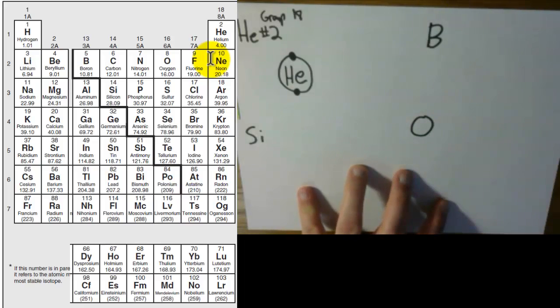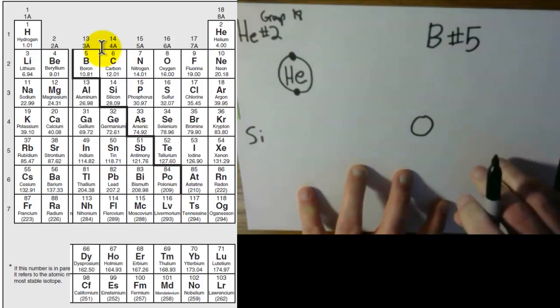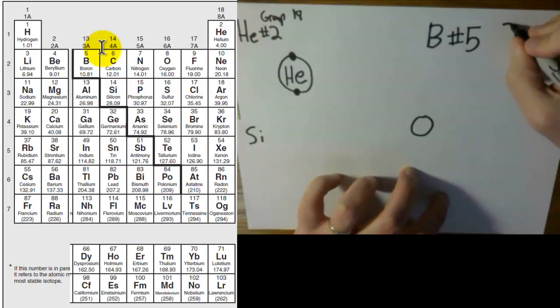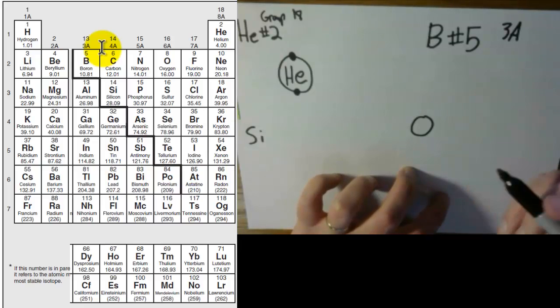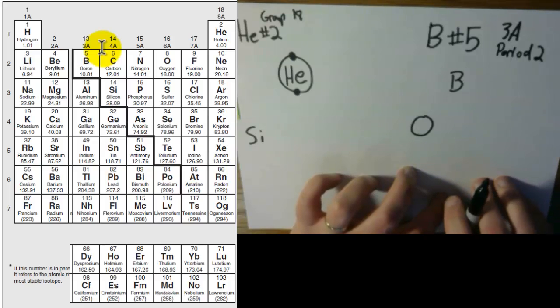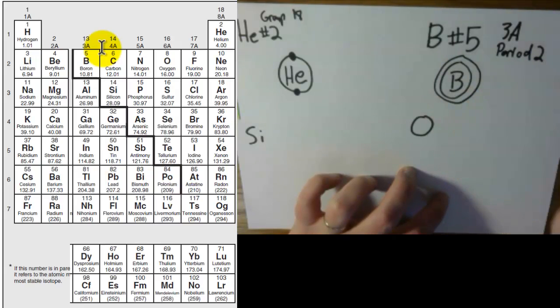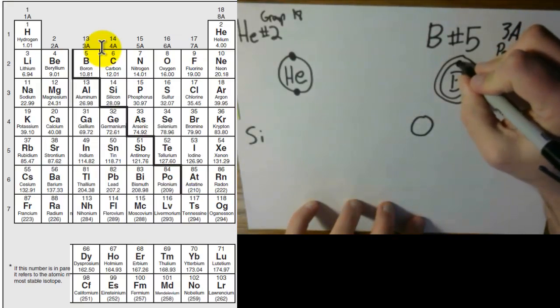Next up is boron. Boron is right here. It's element number five, and it is in group 13 or 3A. So I'm just going to put 3A here because 3 is the number that we care about from there, and it's also in period two. So you start by drawing its symbol again. Since it's in period two, it has two rings. Here's ring one. Here's ring two. The first ring can hold two, so it's going to have two.